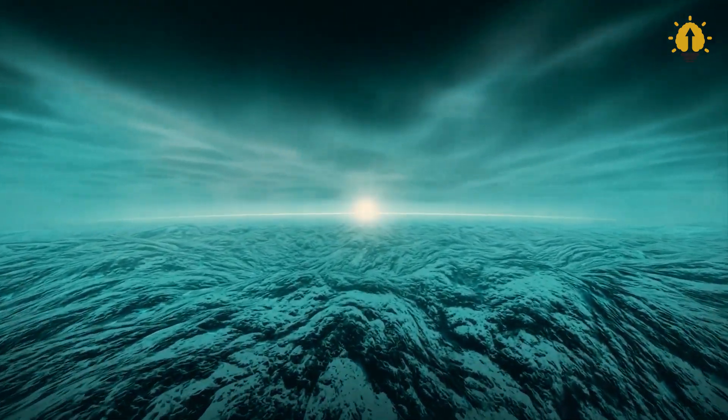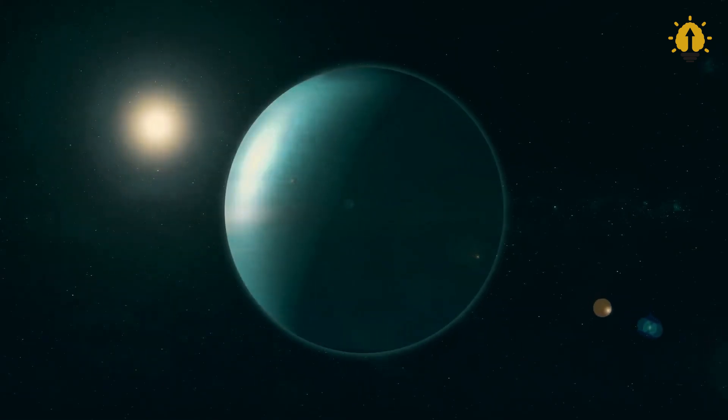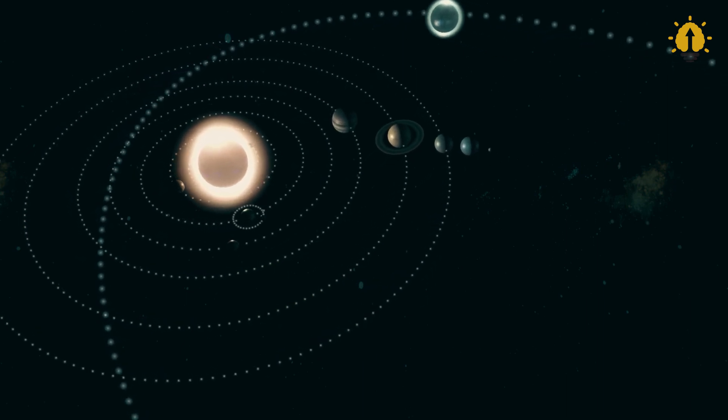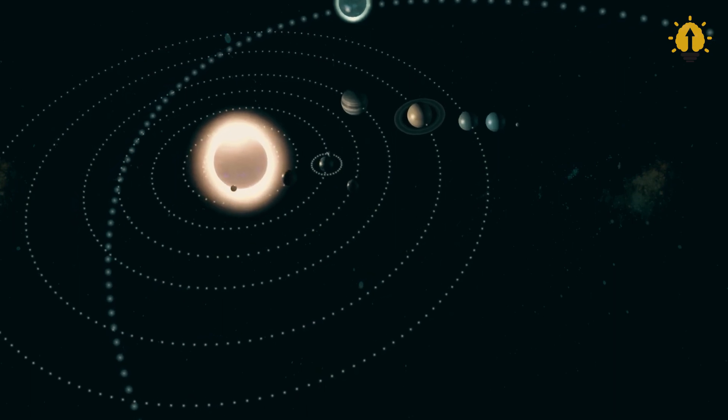If the Voyager ships were able to get so far, it was because they took advantage of a particular planetary alignment in which the four gas giant planets would be very close to each other. Thus, taking advantage of the gravity of the four planets, the spaceships were able to acquire the necessary speed to leave the solar system.